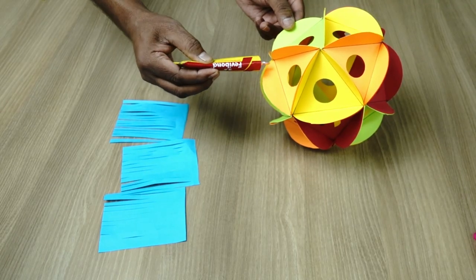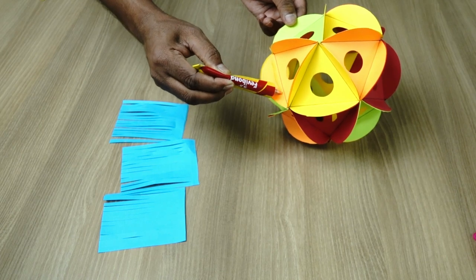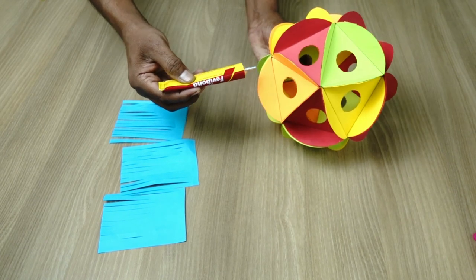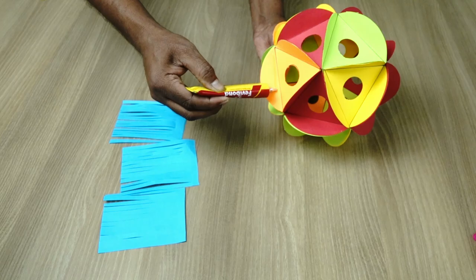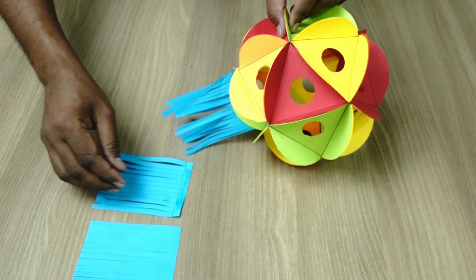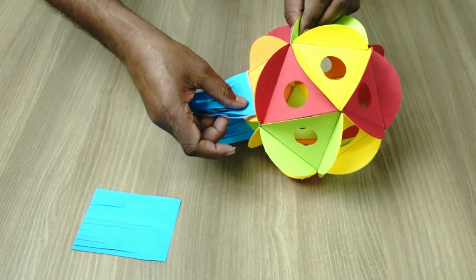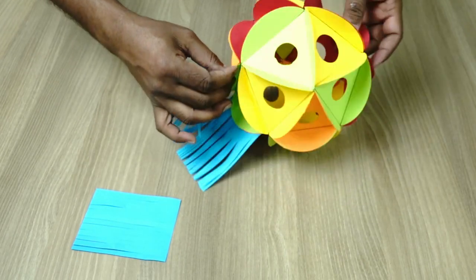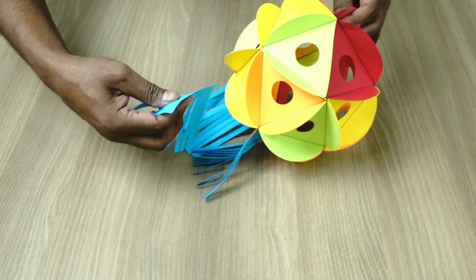In order to make the lantern, we are again going to remove one of these flaps and attach frills, frills of different colored papers at the bottom such that the light will show very nicely and beautifully and it will look like a lantern, like a Diwali lantern.